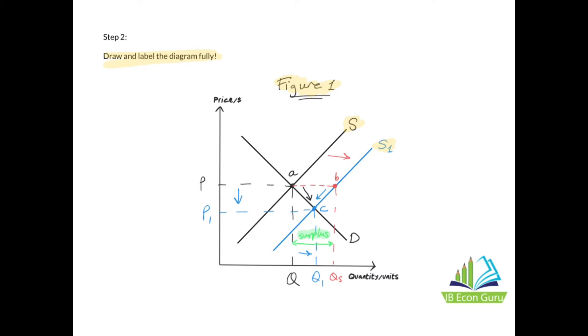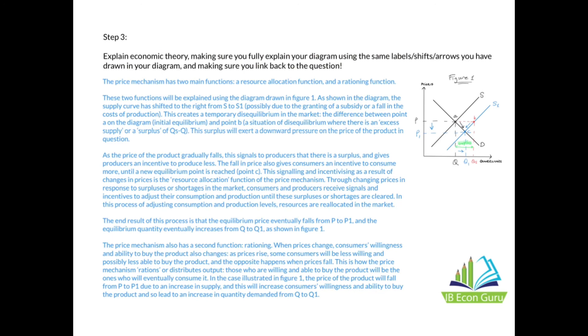This next part of the essay is really the meat—it's the main course. This is Step 3, where you explain the economic theory while making sure that you fully explain your diagram using the same labels, shifts, and arrows you've drawn, while also making sure you link back to the question.